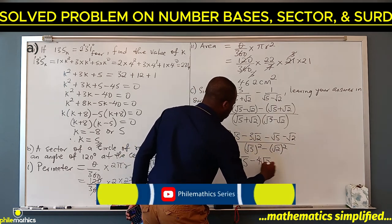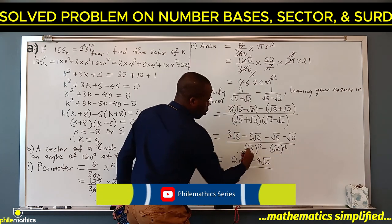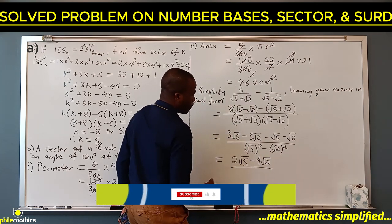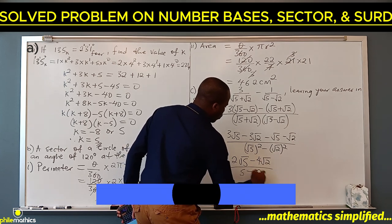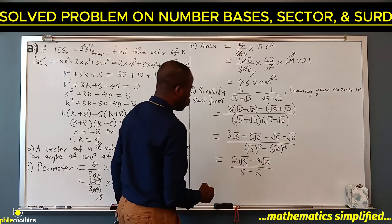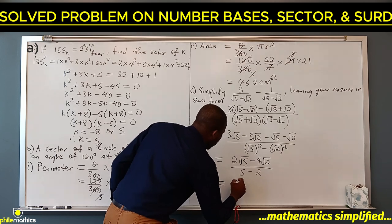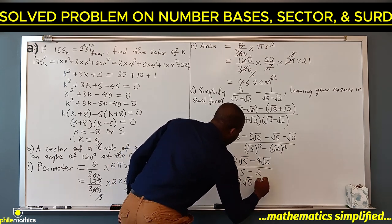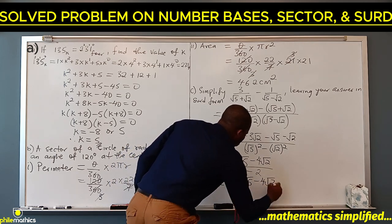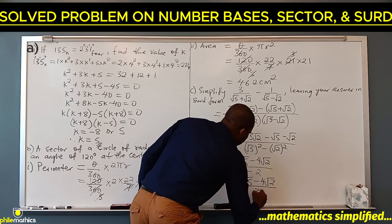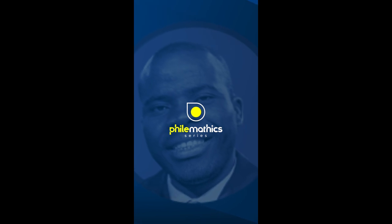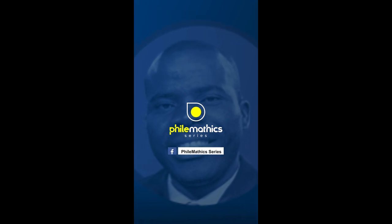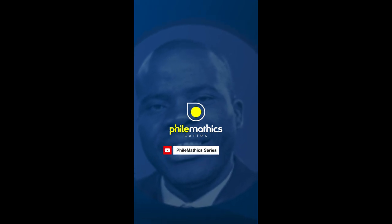Collecting like terms in the numerator: 3 root 5 minus root 5 gives 2 root 5, and minus 3 root 2 minus root 2 gives minus 4 root 2. So the final answer is (2 root 5 minus 4 root 2) over 3.